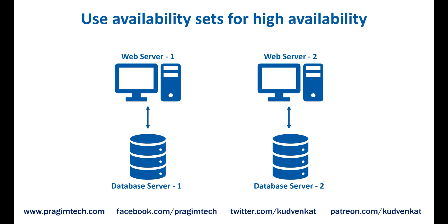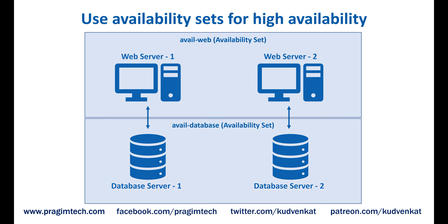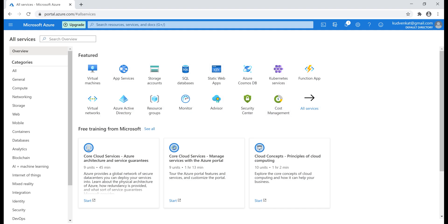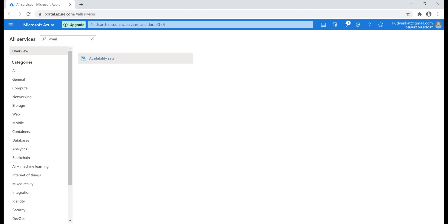So if you are deploying two or more virtual machines, always use availability sets for high availability. Since in our example we have two tiers — a web tier and a database tier — we create two availability sets: one for the web tier and one for the database tier. Let's quickly look at this in action. We are in the Azure portal on the All Services page. We want to create an availability set, so let's search for availability sets and then click Create.